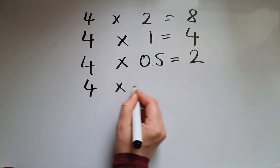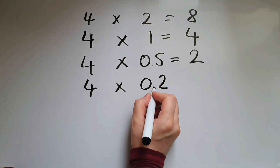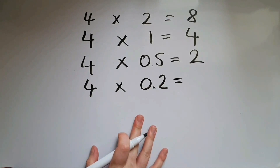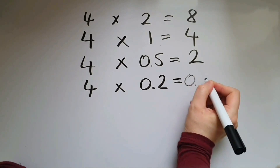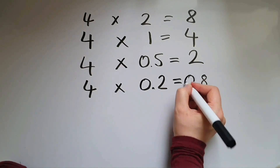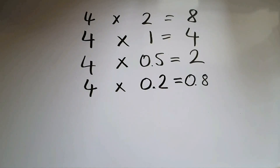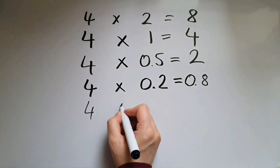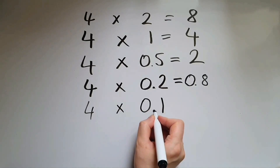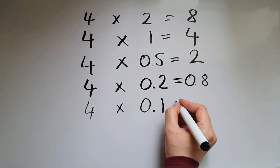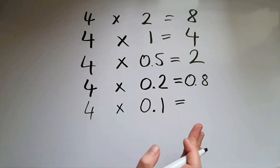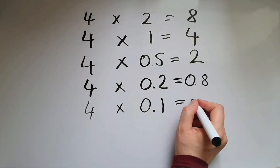If we multiply 4 by 0.2, for example, then that means we get a fifth of it. So it's the same as dividing 4 by 5, which gives us 0.8. If I multiply 4 by 0.1, which as a decimal is like 10%, then I'm going to divide 4 by 10, which gives us 0.4.